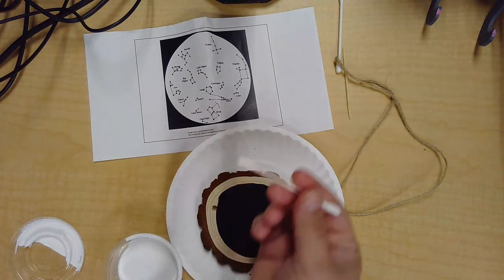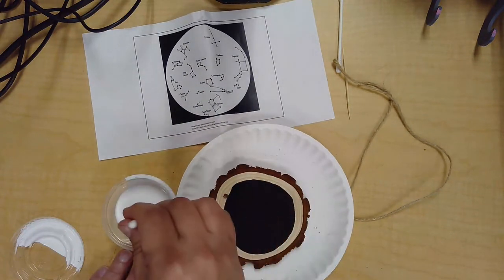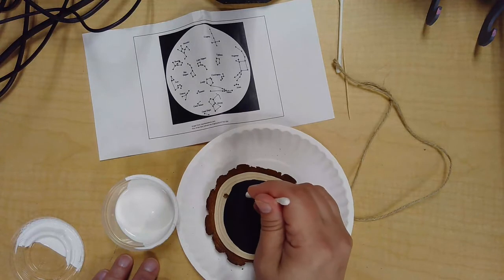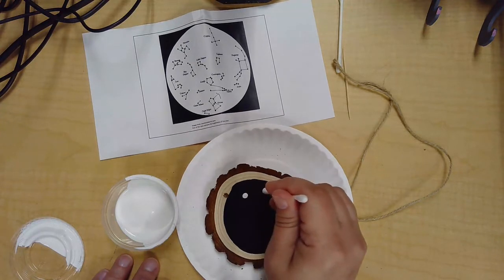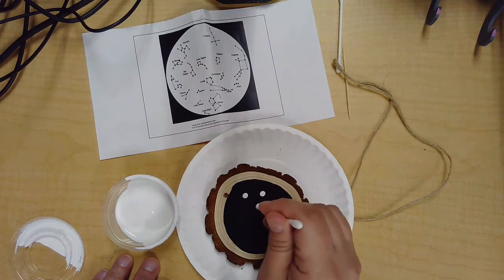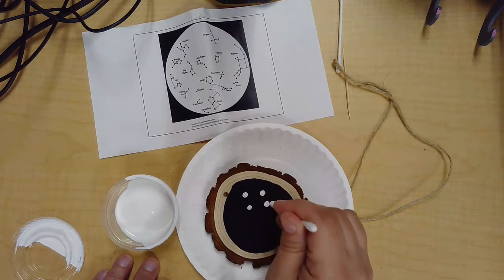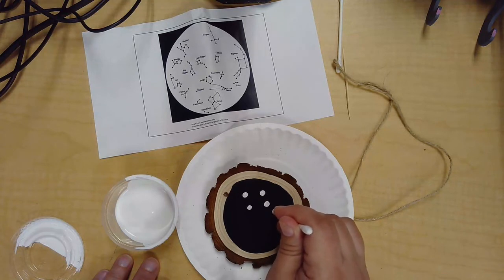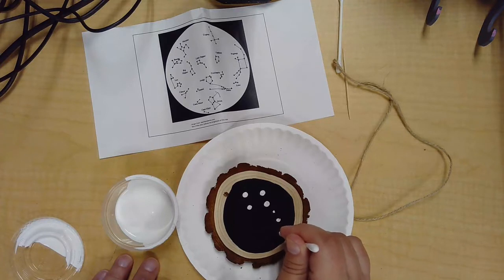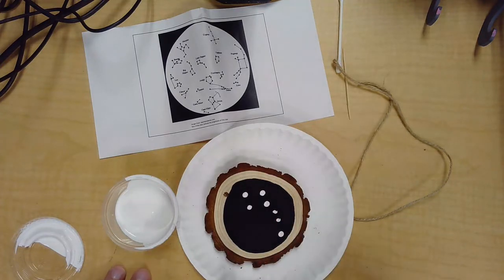There we go. There's the little dipper. One, two, three, four, and then there's a few for the little pot handle. Like that.